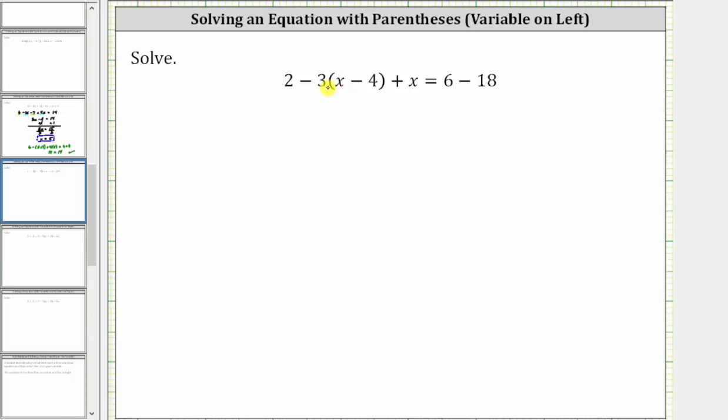On the left side, we need to eliminate the parentheses, and because of the subtraction here, we distribute negative three. Then we combine like terms. And on the right side, we combine like terms. Clearing the parentheses, we have two, and then negative three times x is negative three x, giving us minus three x. And then negative three times negative four is positive 12, giving us plus 12. And we still have plus x equals, on the right side, six minus 18 is negative 12.